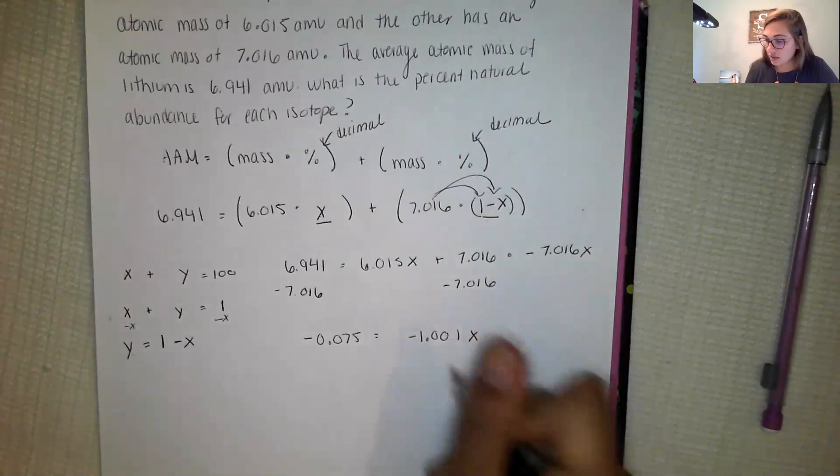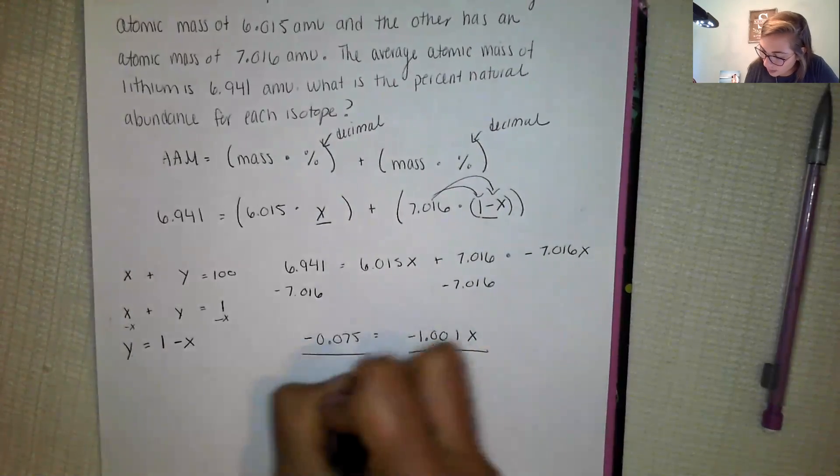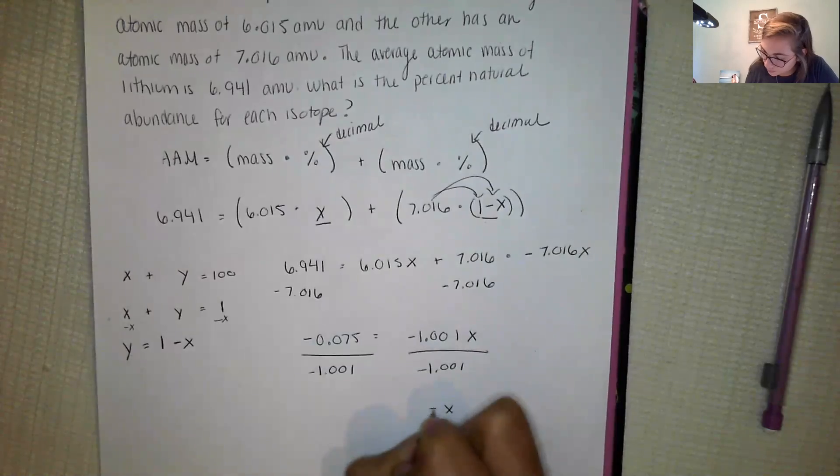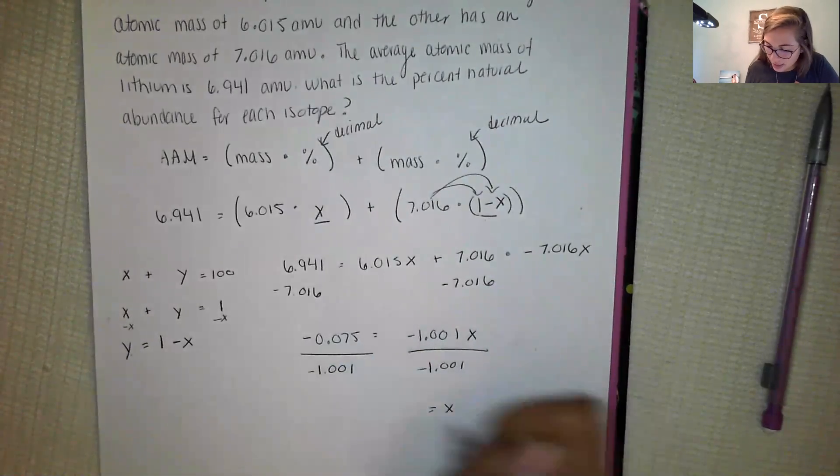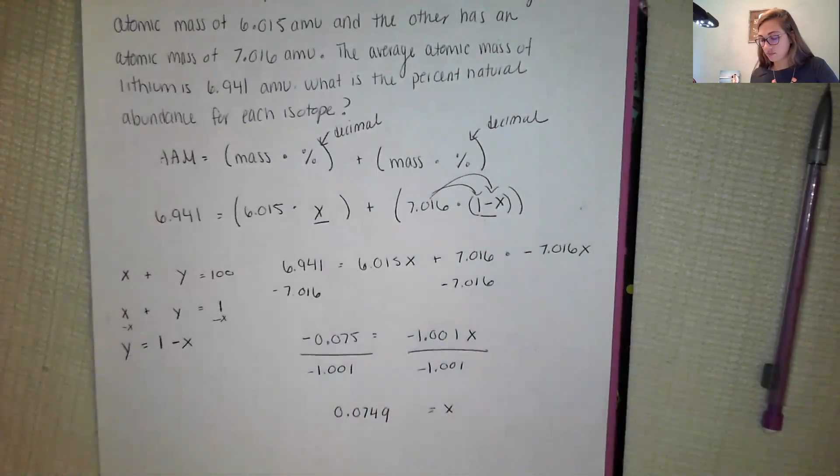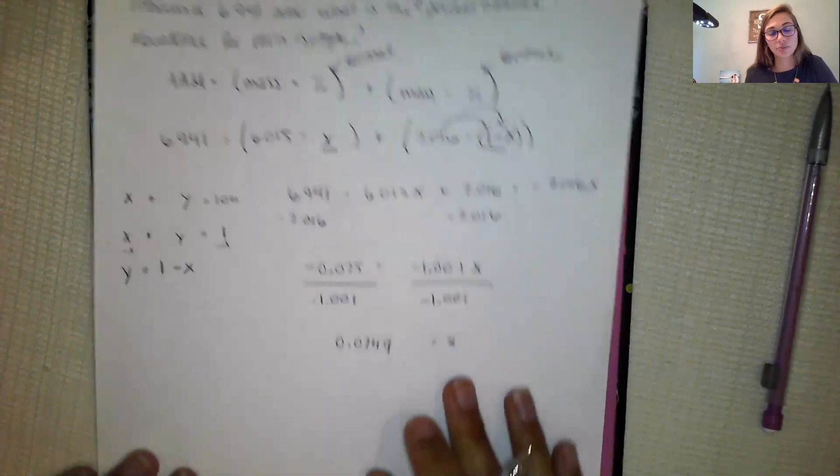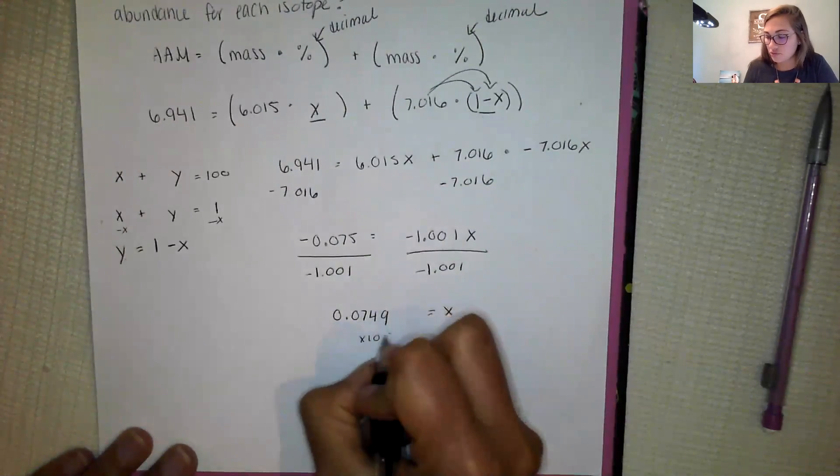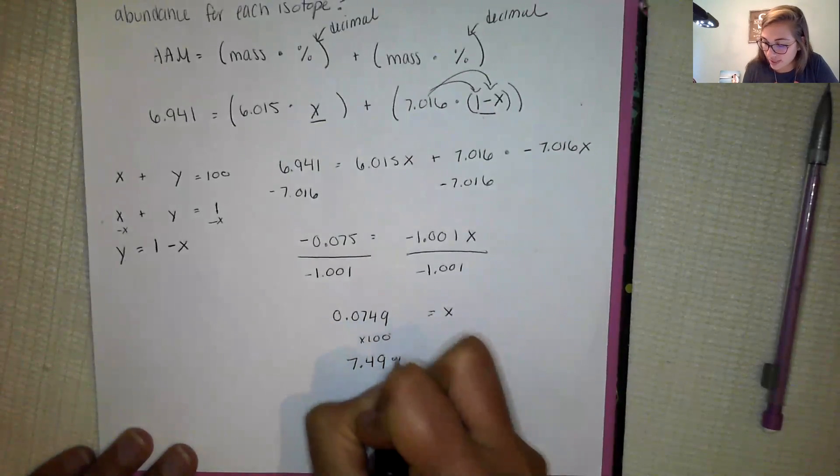So I have to divide both sides and so I get X as 0.0749. So this is our decimal form and if we were to convert this into a percentage now we multiply by 100, so when I multiply it by 100 I get 7.49 percent.